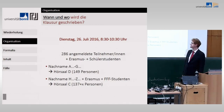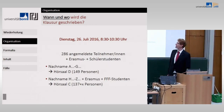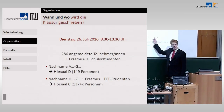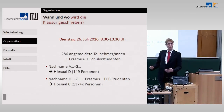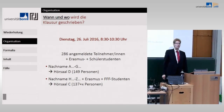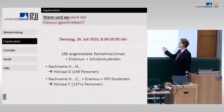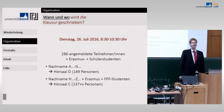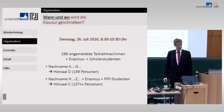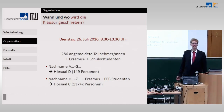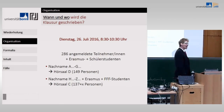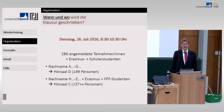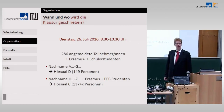Die Klausur findet statt am Dienstag. In Hörsaal D sitzen alle, die mit dem Anfangsbuchstaben A, B, C, D, E, F oder G anfangen – insgesamt 149 Studenten. In Hörsaal C sitzen 137 Leute sowie alle Erasmus-Studenten und alle Schülerstudenten. Wenn Sie zum falschen Raum gehen, werden Sie zum anderen Raum rübergeschickt. Es gibt keine Chance, dass Sie im falschen Raum schreiben können.